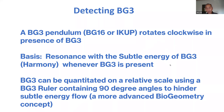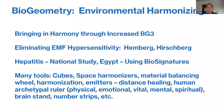BG3 can be quantified using a BG3 ruler. Certain angles inhibit the BG3 energy quality, and by stacking these inhibiting angles you can find the degree of strength of that BG3 energy. You can learn all about this in the biogeometry courses — look up biogeometry on the web to find the key website where courses are offered.